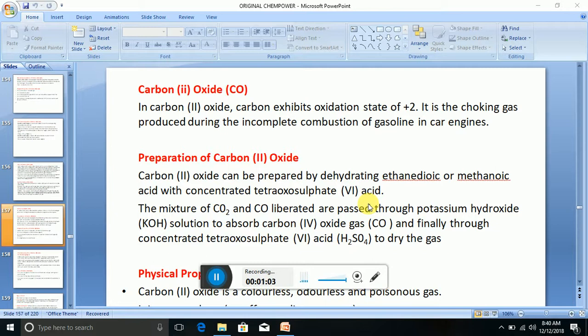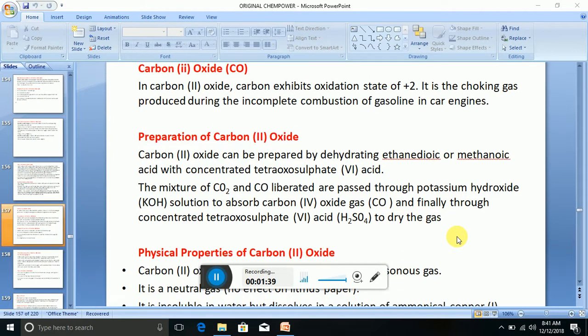Using concentrated tetraoxosulphate (VI) acid, the mixture of CO₂ and CO liberated are passed through potassium hydroxide (KOH) solution to absorb carbon (IV) oxide gas (CO₂), and finally through concentrated tetraoxosulphate (VI) acid (H₂SO₄) to dry the gas. We know that H₂SO₄ is a drying agent.